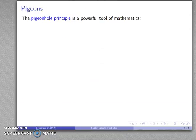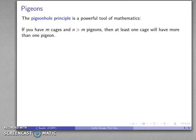So let's talk about birds. The pigeonhole principle is one of the most powerful tools in mathematics, and it emerges as follows: Suppose I have M cages and N greater than M pigeons. Well then, at least one cage will have more than one pigeon. Well, that's kind of obvious. What can we do with it?